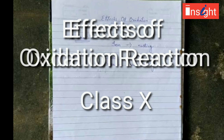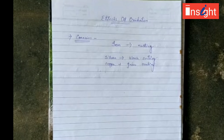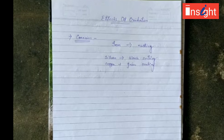In the previous class I told you about the reaction in which a substance gains oxygen or loses hydrogen — that is called an oxidation reaction. Now we will study the effects of some oxidation reactions taking place around us.